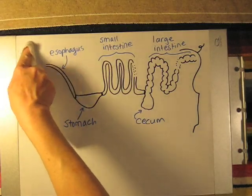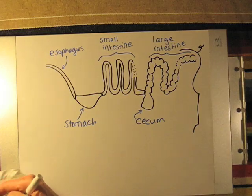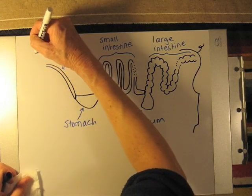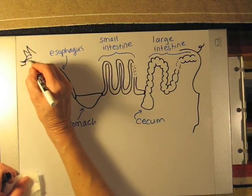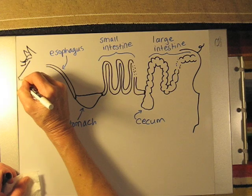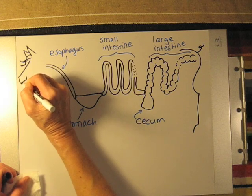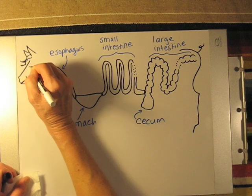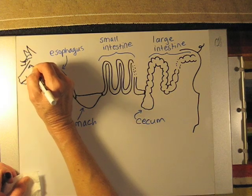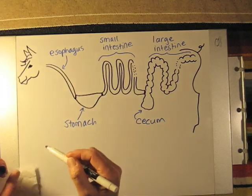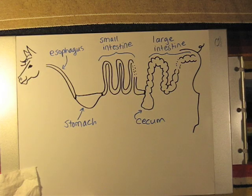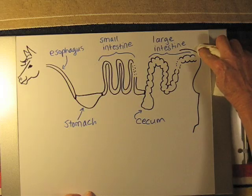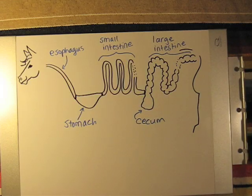To change from a monogastric animal such as the pig to an herbivore such as the horse that is a hindgut fermenter, we change the head, which would have slightly different teeth because the horse is an herbivore and the pig is an omnivore, so they have slightly different teeth inside their mouth.